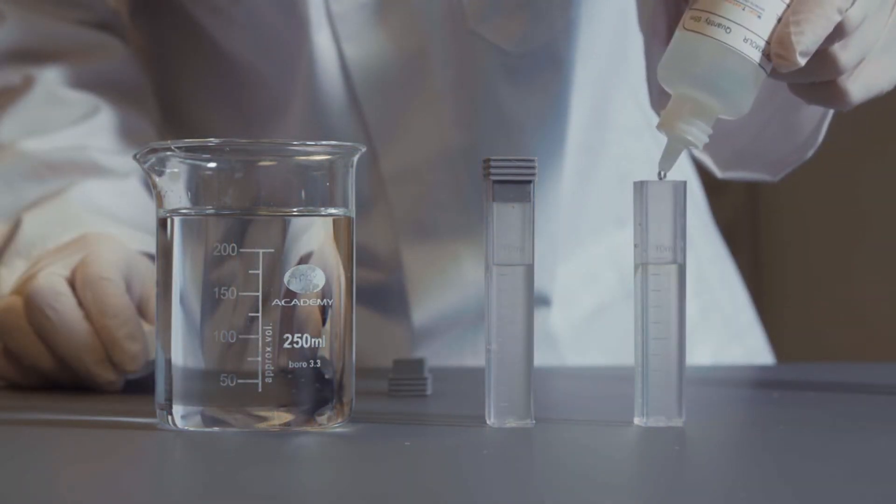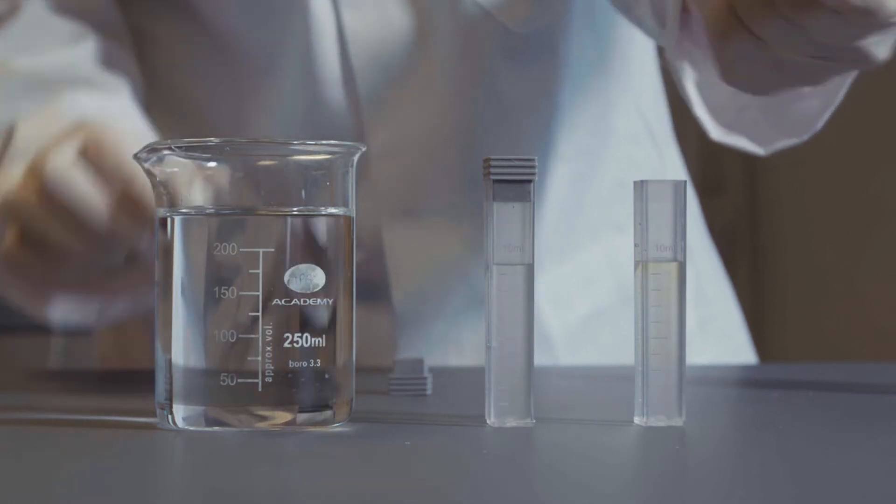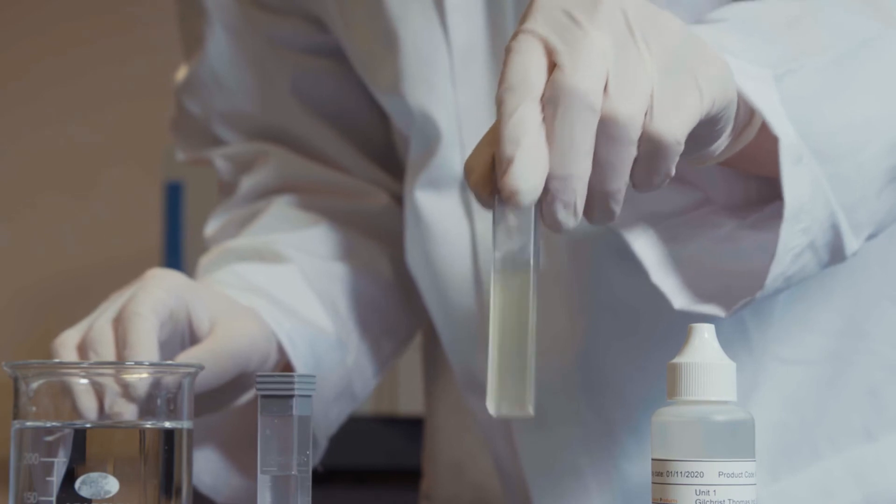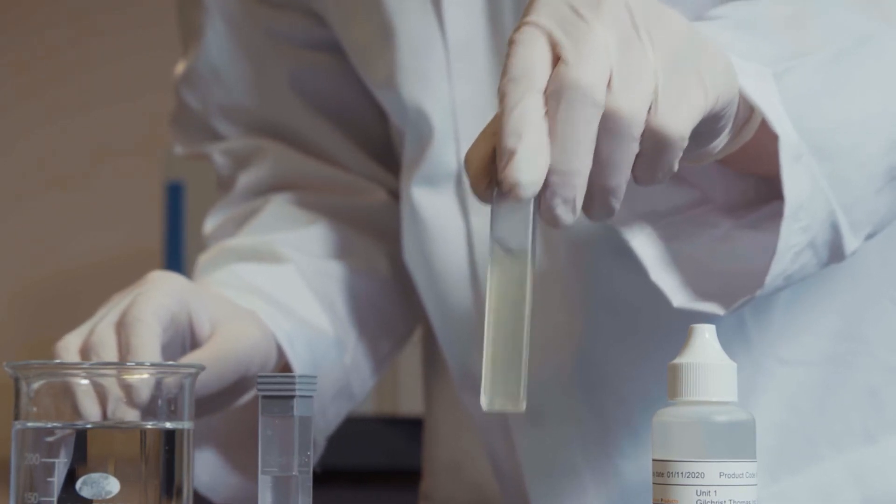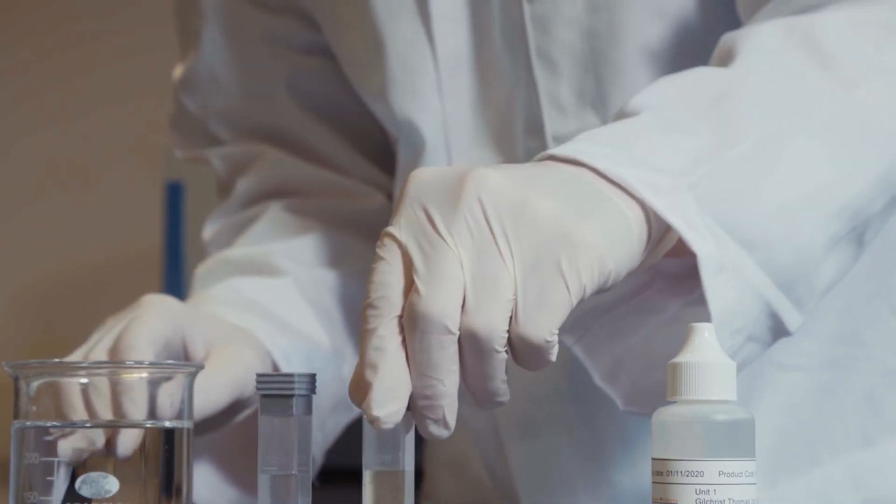To the second tube, add 5 drops of the MolR Molybdate indicator by squeezing the bottle. Gently shake the tube to mix the sample and reagent together. If Molybdate is present, the sample will turn yellow.